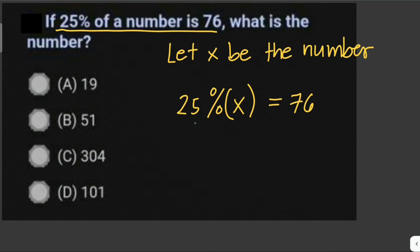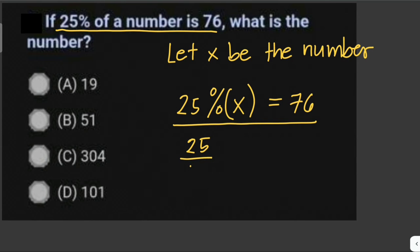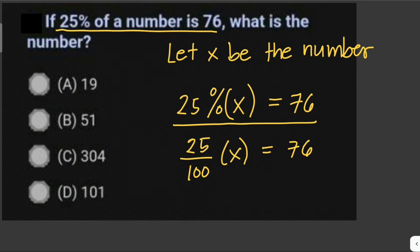We write this as a mathematical equation: 25 over 100 times x equals 76, which can also be written as 0.25 times x equals 76. We then divide both sides by 25 over 100.